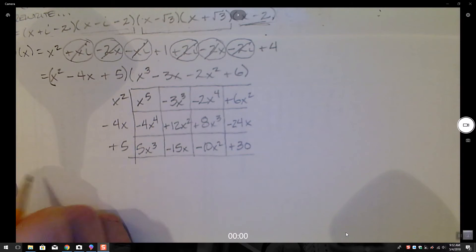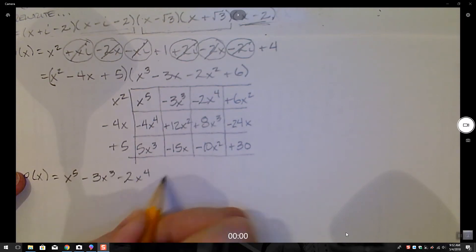Let's see if I can get it all on one piece of paper. Okay, so we have p of x equals... Okay, let's start here. x to the fifth minus 3x to the third minus 2x to the fourth plus 6x squared. Second row.